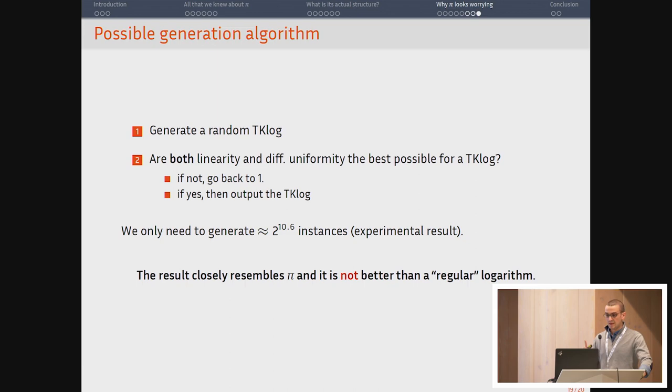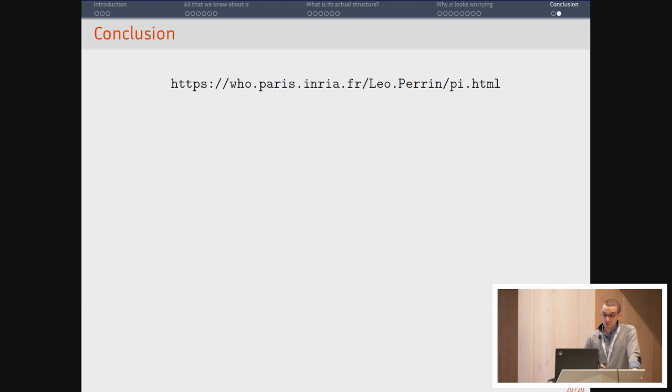However, the result of such an algorithm would really look like pi. However, it's never better than a regular logarithm. So if you just take a plain discrete log, the differential uniformity and linearity will be the same and you will actually have fewer of these coefficients in the DDT-LAT. So it's an epsilon better. Pi is an epsilon worse than a discrete log. So the reason to use a TK log instead of a logarithm is not an improvement of the cryptographic properties.